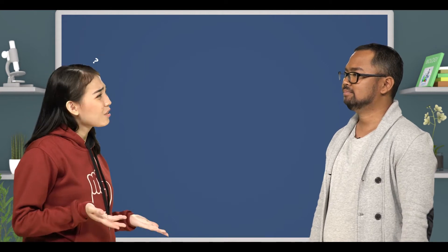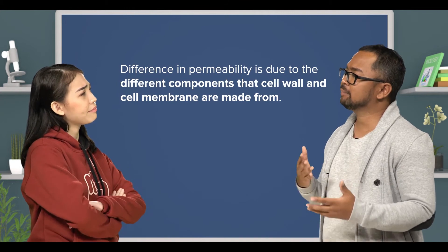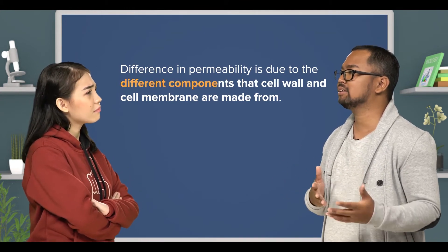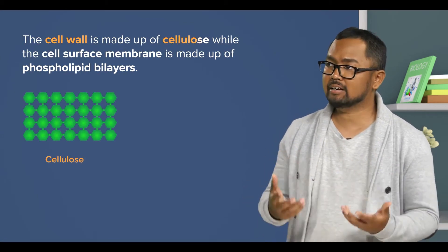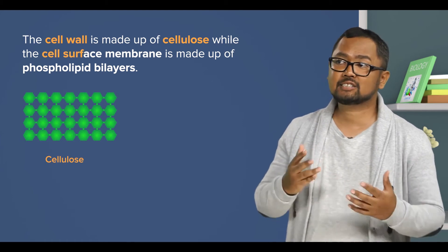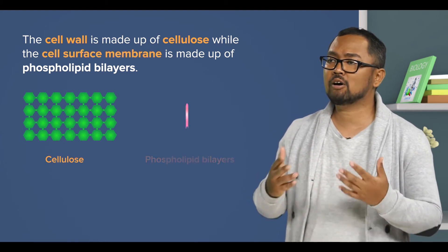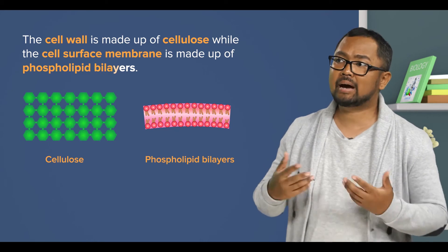But why is that so? Well, this difference in permeability is due to the different components that they are made from. For instance, the cell wall is made up of cellulose, while the cell surface membrane is made up of phospholipid bilayers.